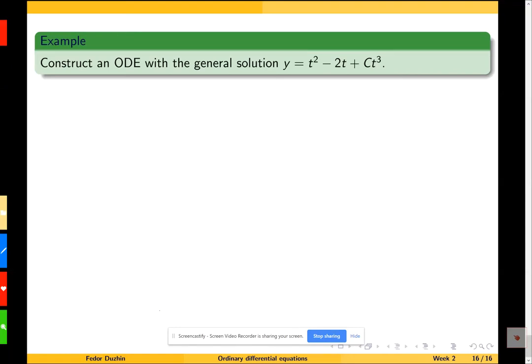Here is an example of constructing a differential equation with a specified general solution. How do we do this? Well, the idea is that we have a formula for y, so we just differentiate it and find the formula for y'. If this is y, what is y'?